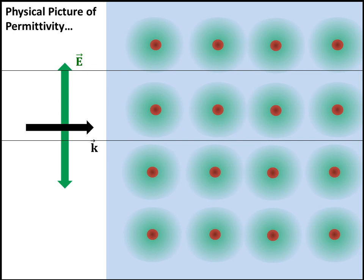It's going to help us to go back to our physical picture of permittivity. Permittivity is the macroscopic property of a material that says how an electric field is going to interact with matter. In our picture of permittivity, the electric field pushes on the electron clouds, which are free to move, but the atom cores are locked into a lattice and pretty much stay where they are.